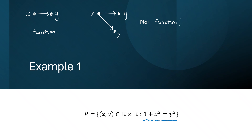Let's take a look at this relation R, defined by 1 plus x squared equals y squared. We want to find a counterexample to show that we can find an x that gets mapped to two different values in the codomain. The easiest way to spot this is to take the equation and try to solve it for y. Solving for y gives us y equals plus or minus the square root of 1 plus x squared.